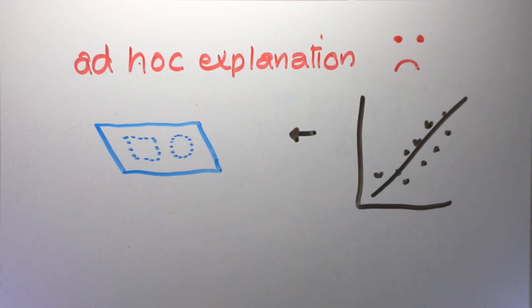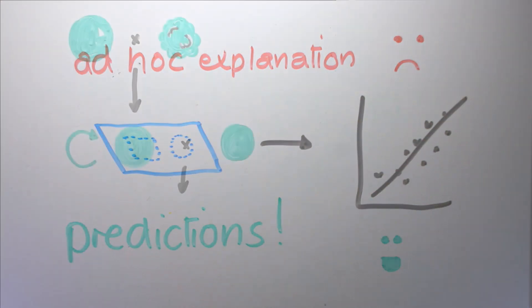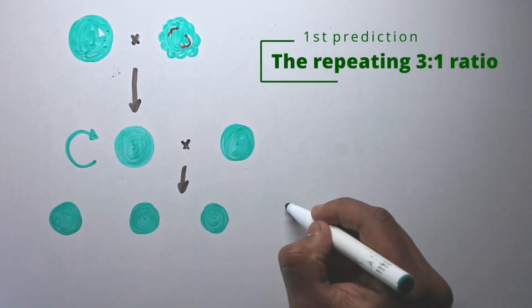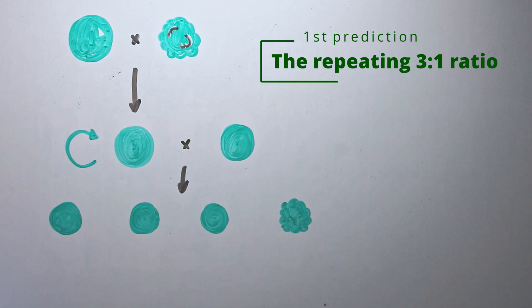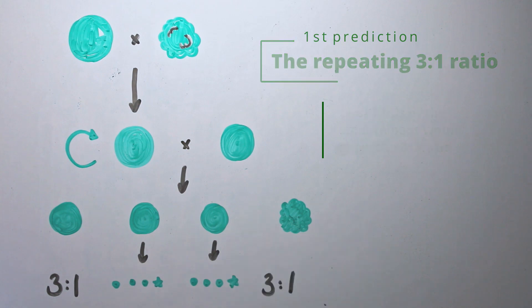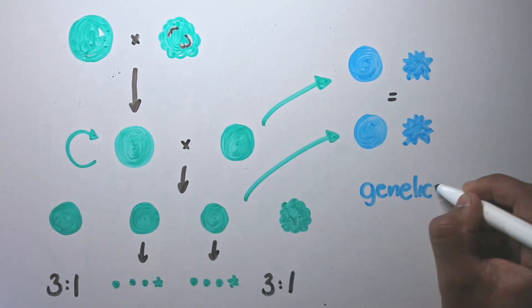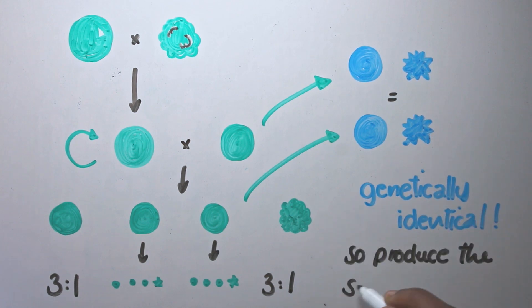To make it convincing, he needed to make predictions using the model on things that he couldn't have predicted without it. His first prediction was that if he took the smooth pea offspring from his experiment and self-bred them, two-thirds would give the same three to one ratio of smooth peas to wrinkled peas. This was because his model showed that two-thirds of the smooth peas would be identical to their parents, and so would result in the same offspring. He turned out to be absolutely right.